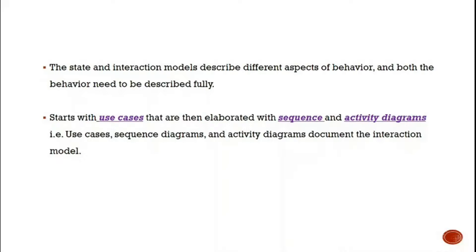The state and interaction models describe different aspects of behavior, and both need to be fully described. The interaction diagram starts with use cases, which are then elaborated with sequence and activity diagrams. We have seen use cases in the mental health patient management system, using actors and ellipses to describe events. We have also seen an activity diagram for the insulin pump control system, which we considered as the context diagram.